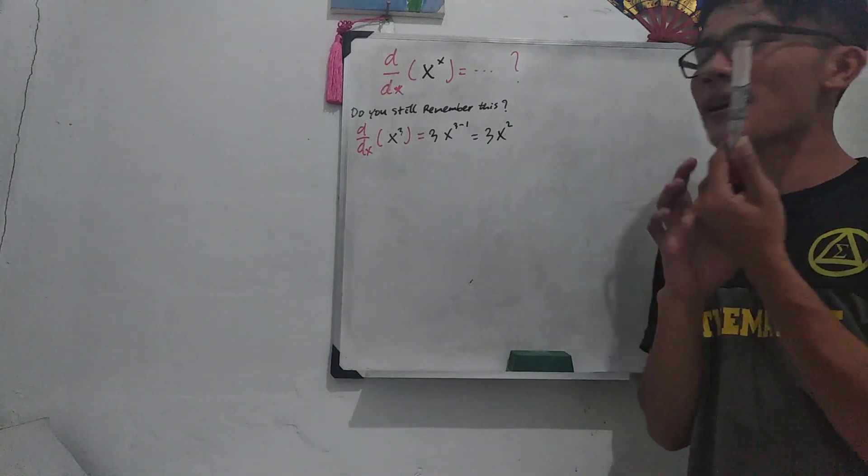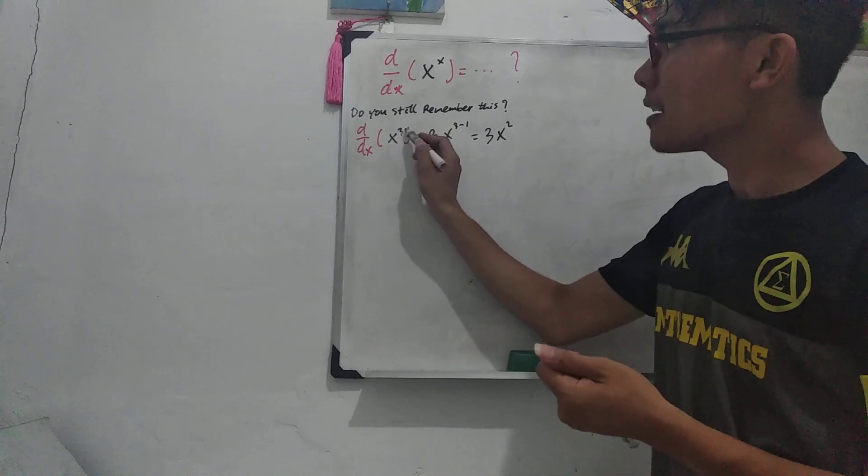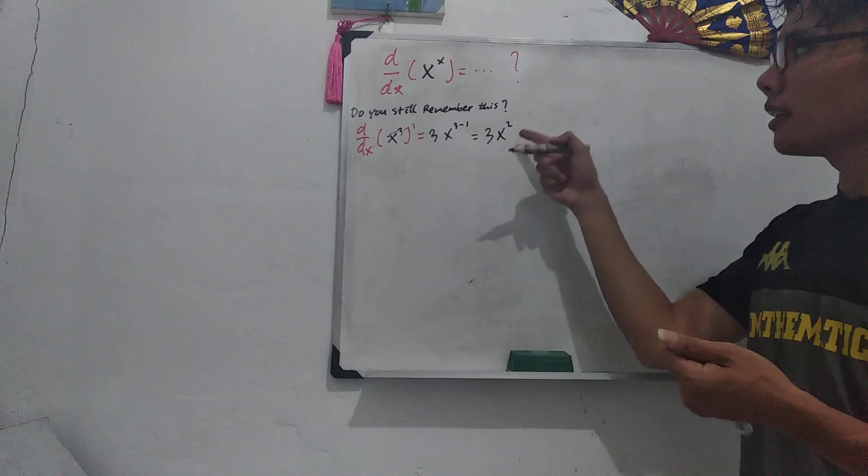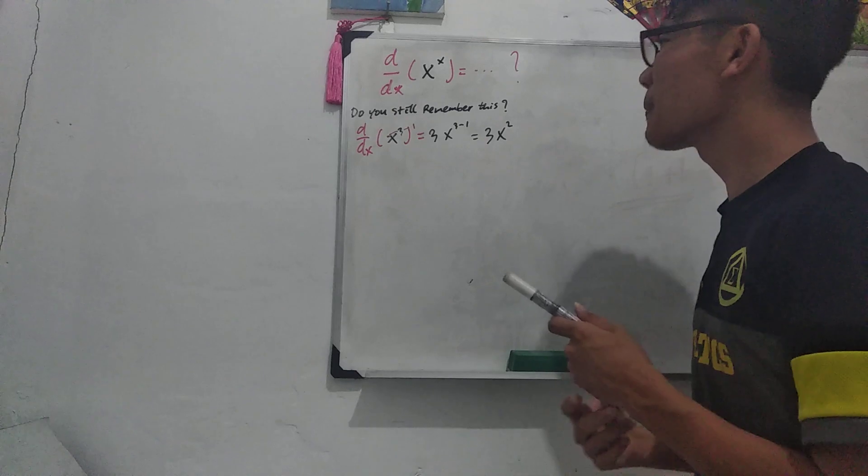And it's gonna be 3x to the power of 2. Well, it's easy, right? So that means I will just put this to the front, and then minus 1, it's gonna be 3, and x to the power of 2. Alright, so good, you still remember that.